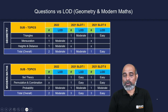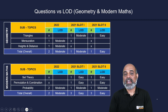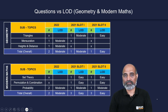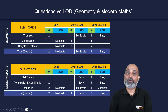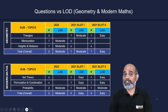Modern maths consists of three topics: set theory, permutation and combination, and probability. In 2022, both modern maths questions were from probability and were moderate — not because of calculation difficulty, but because probability as word problems is less familiar territory. In 2021 slot one, there was one question from each of set theory, P&C, and probability — overall easy. Slot two was also one question each from all three, again overall easy.